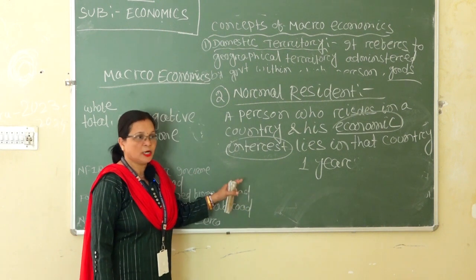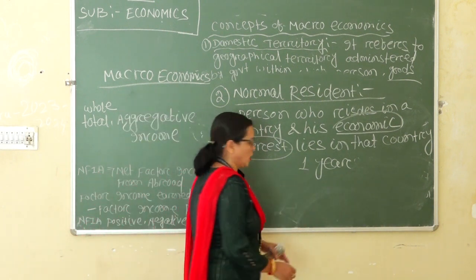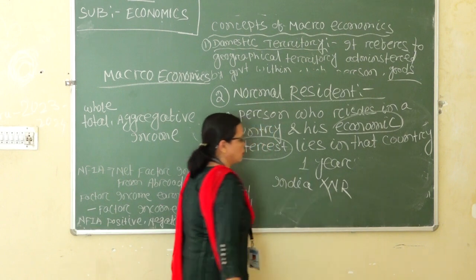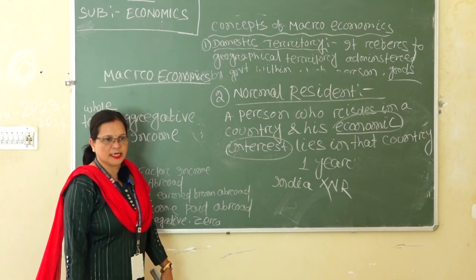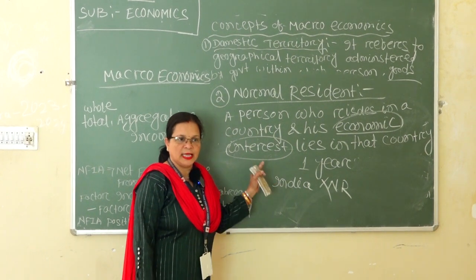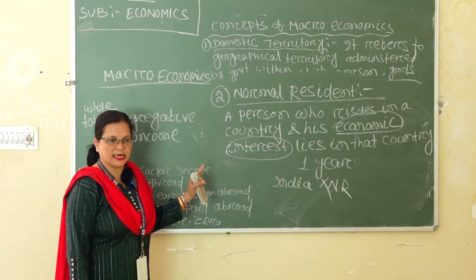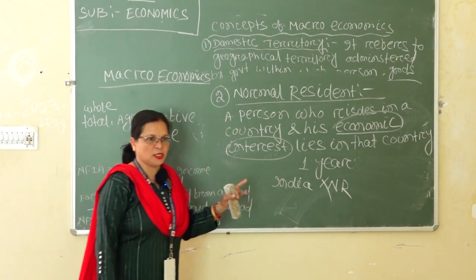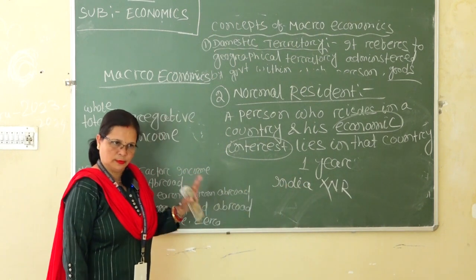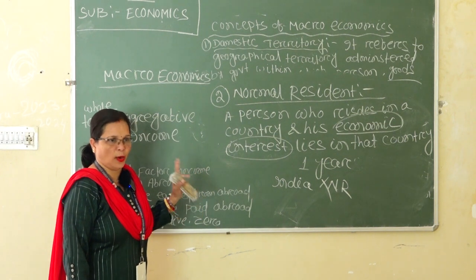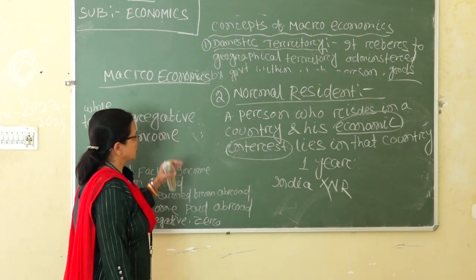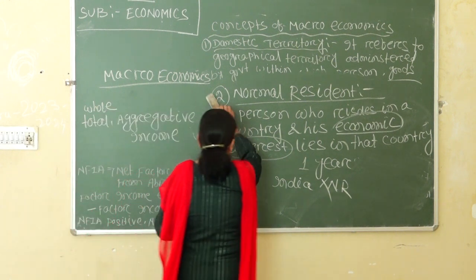Resides means a minimum of one year. If a person resides in a country for a minimum of one year, then he or she is a normal resident. Foreign visitors who come to India are not normal residents because they do not stay for the minimum one year. So the minimum residing period for normal residency is one year.